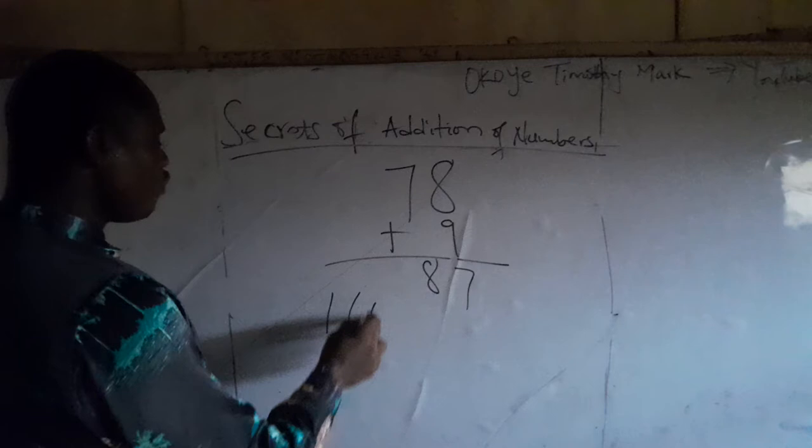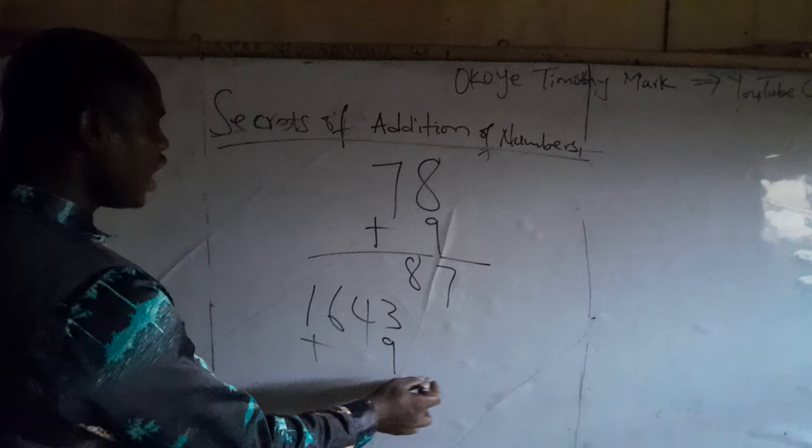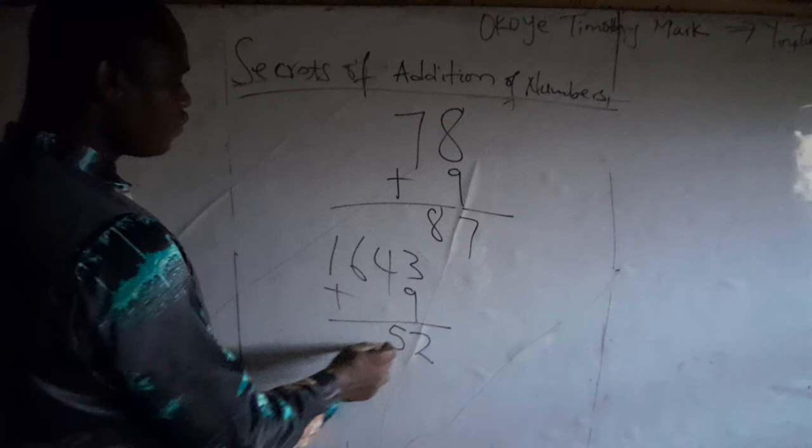If I have 39 plus 9, just decrease the 3 by 1 — that is 2. And increase 1 by 1 — this goes to 5. So you bring another 1, because this is the unit side and this is the 10 side. The answer is 48.